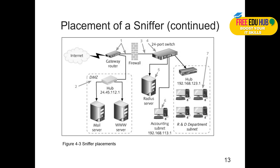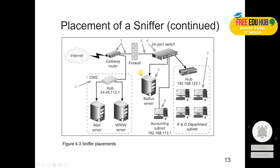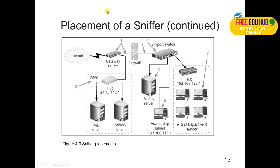As shown in the example, there are many identified placement positions — numbered one through seven — showing the places where you can position sniffers. However, it really depends on whether the placement helps you collect the information you are looking for. For example, if you place it on the gateway router, the information collected would be huge because everything from all machines on the network comes through there, generating a very large file. Additionally, your firewall would detect it immediately at that position.